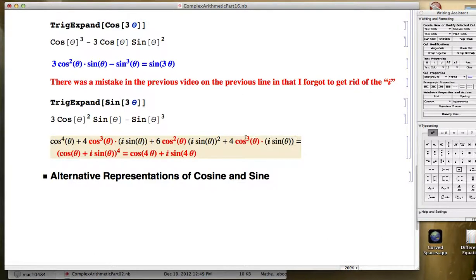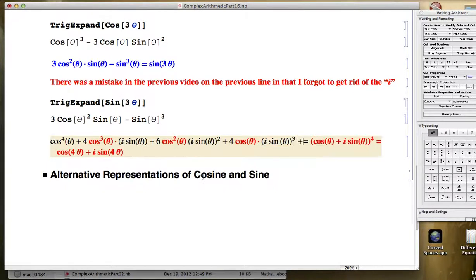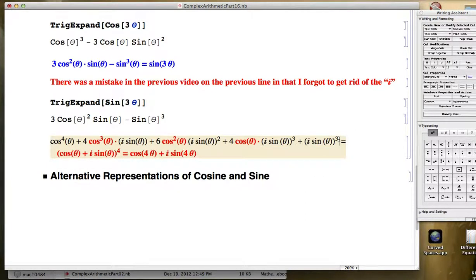times the first term to the first power, so this cube will become a one, or I won't put anything there. Times the second term in the binomial you are expanding, i sine theta, to the third power. And finally, the last term is going to be the second term to the fourth power. You might want to re-watch that if that went by too fast.